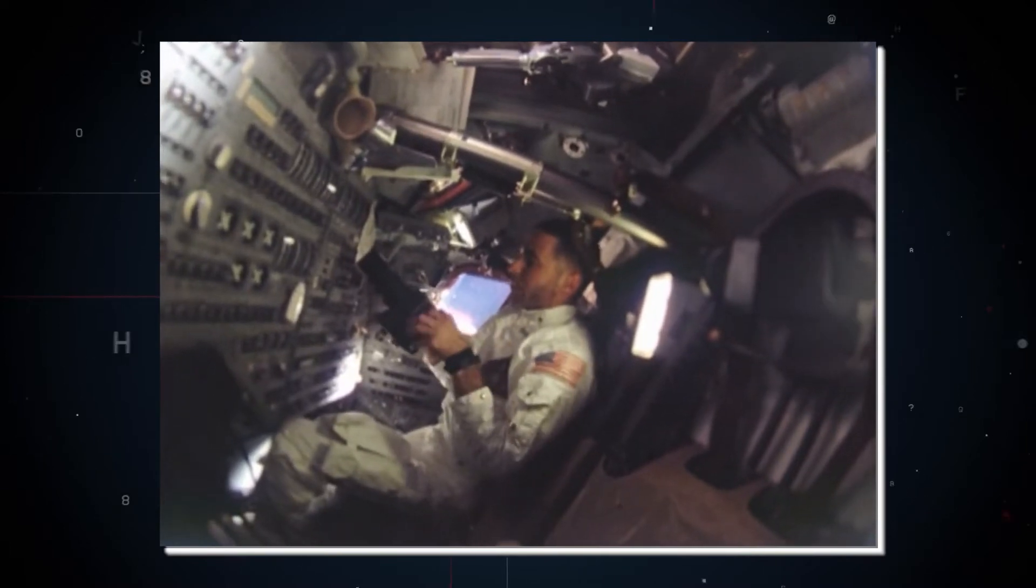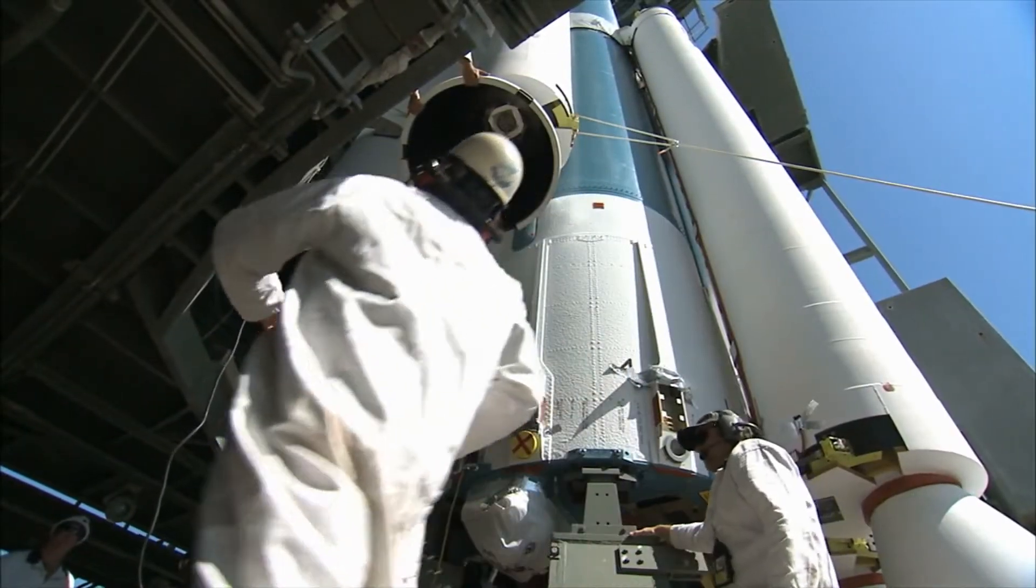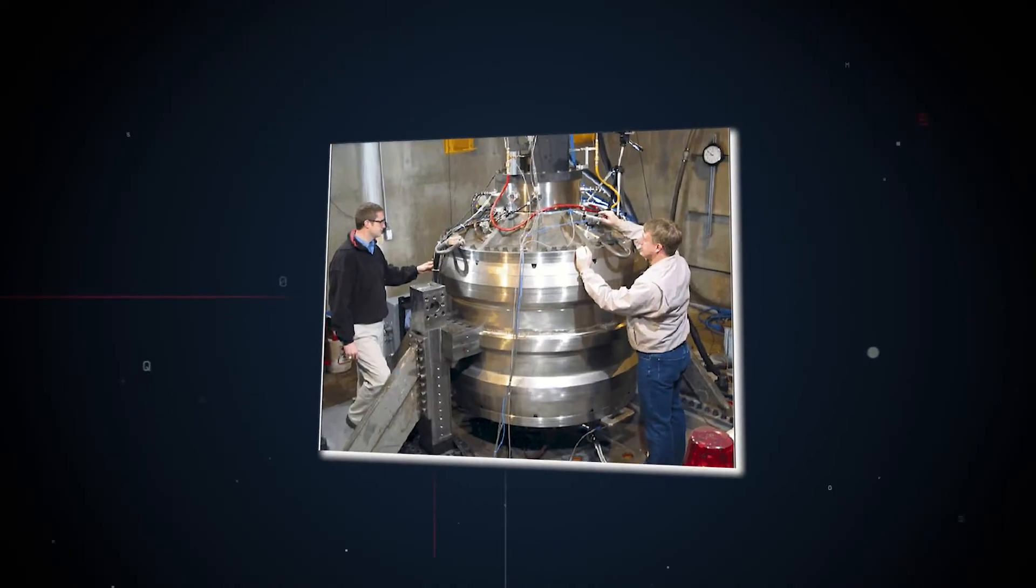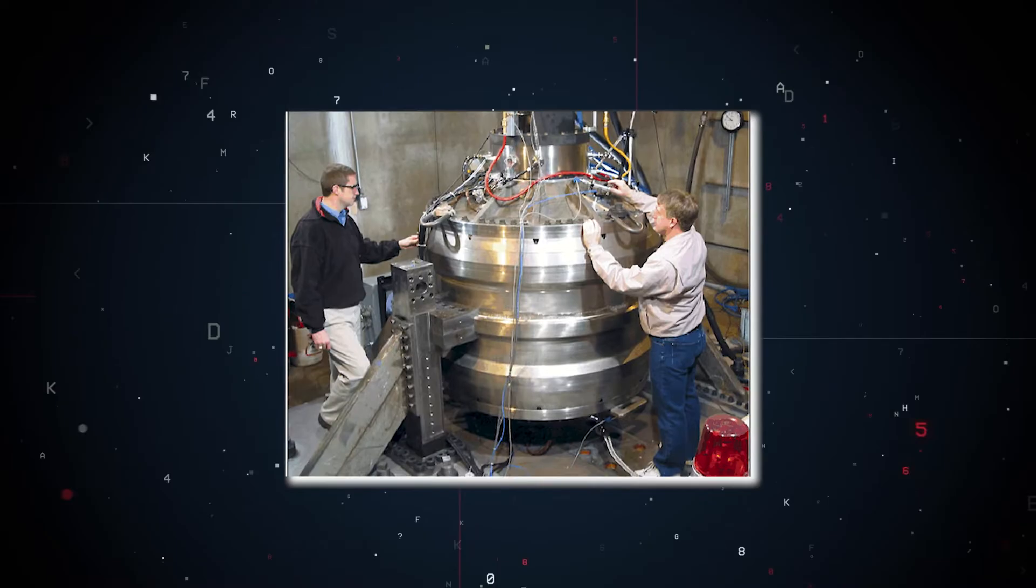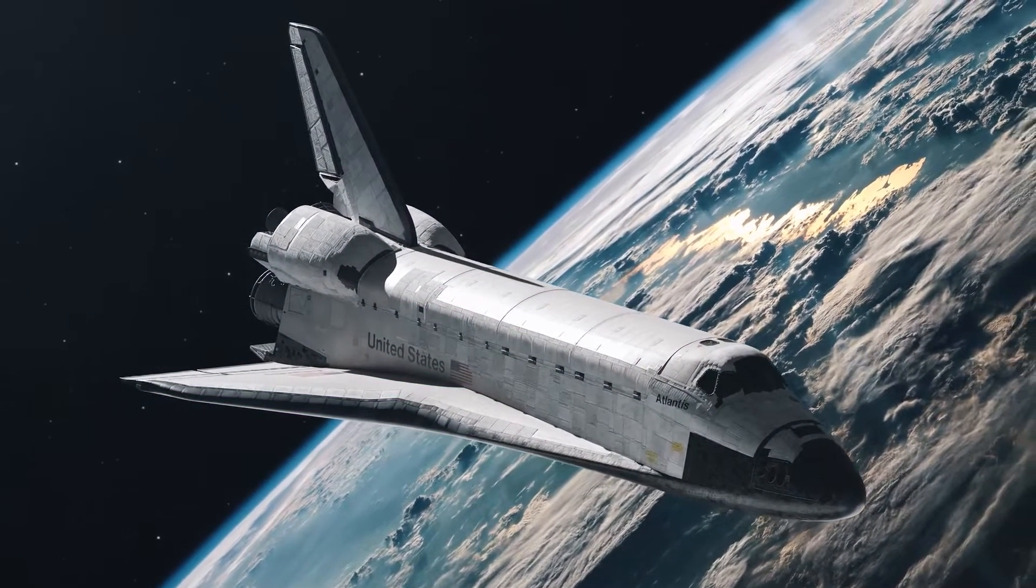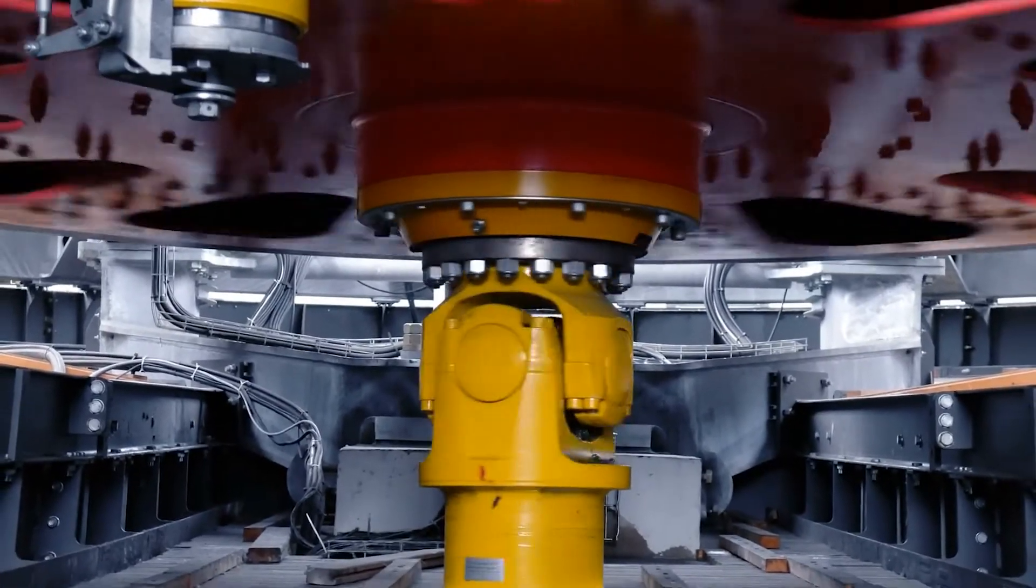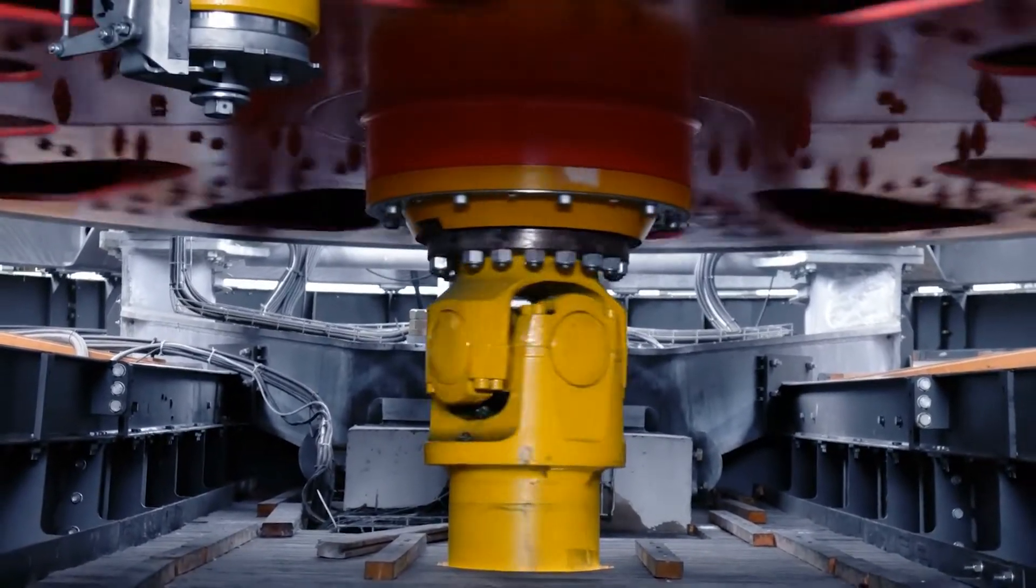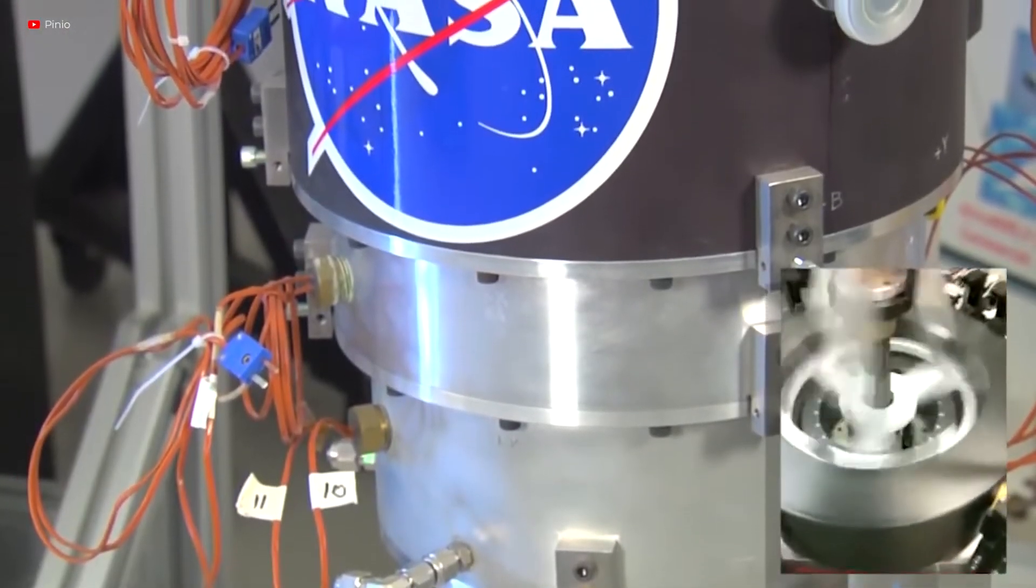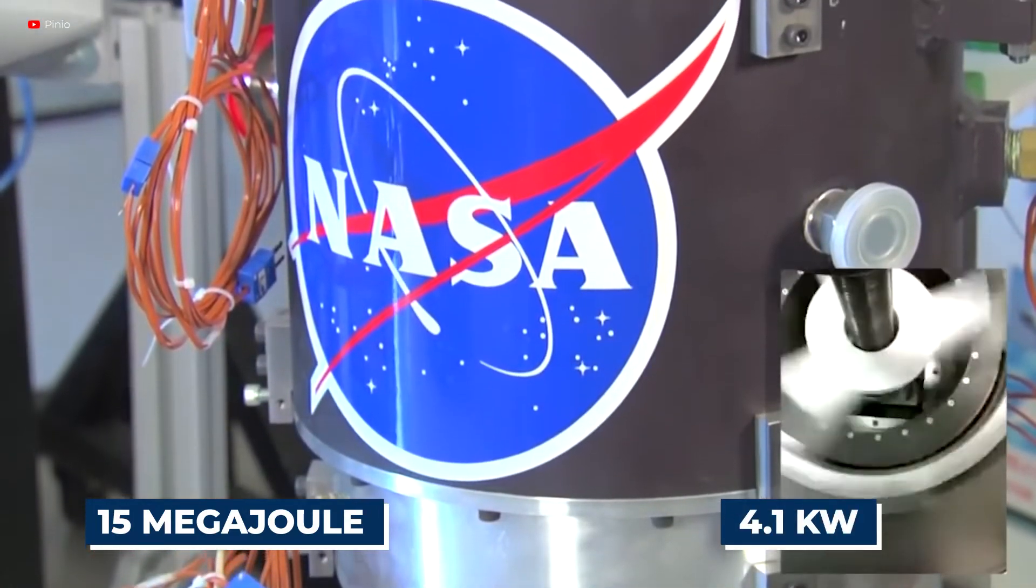On the space station, the flywheel battery has characteristics that make it attractive. It takes up the same amount of area and weight as the chemical batteries it would replace, yet it appears to last 3 to 10 times longer. Plus, it can keep a load running for twice as long as a chemical battery without needing to be recharged. Finally, the flywheel battery's status of charge can always be determined by measuring its rotational velocity.